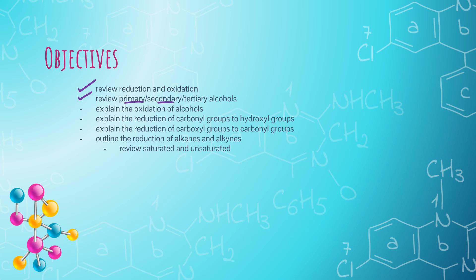We're also going to remind ourselves what primary, secondary, and tertiary alcohols are. We're going to talk about the oxidation of those different kinds of alcohols, and then we're going to flip it and go backwards — talk about the reduction of carbonyl groups back to hydroxyl groups, and also about how we go from carboxyl groups back to carbonyl groups. Then we're going to wrap up with a look at the reduction of alkenes and alkynes, making them go from unsaturated to more saturated.